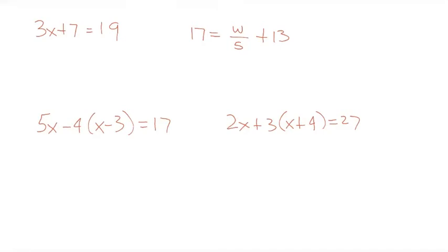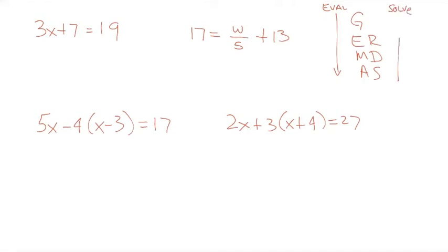Order of operations: grouping symbols, exponents and roots, multiplication and division, addition and subtraction. When we evaluate, we go from the top down — we stick a number in for the variable. If we are solving for a variable, we go from the bottom up. Distribute, combine, move, and isolate. So: distribute nothing, combine nothing, move by subtracting seven from both sides, isolate by dividing by three.